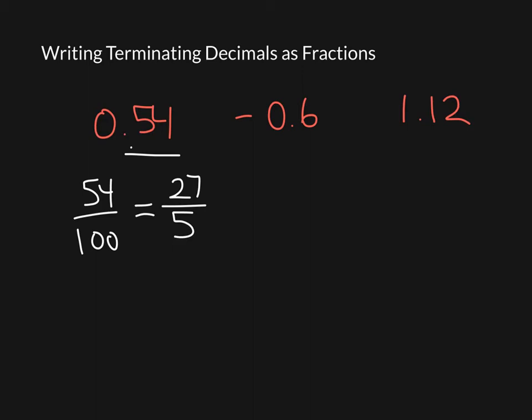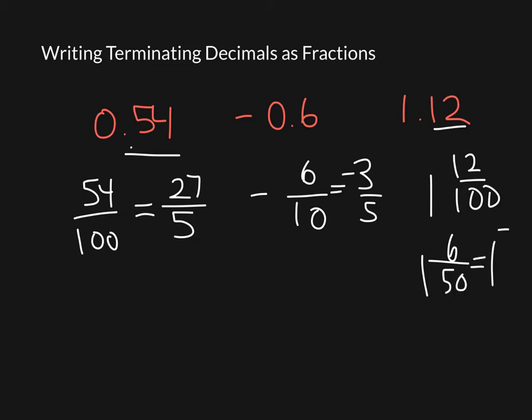This one here is going to be 6 tenths. Don't forget the negative. That's going to be 3 fifths. Once again, don't forget the negative. This last one here is going to be, well, I'm going to leave the 1 off to the side, and that's going to be 12 over 100 because it's 12 hundredths. And so it's going to be 1 and 6 fiftieths, which is going to be 1 and 3 twenty-fifths. So that's how you change terminating decimals into fractions.